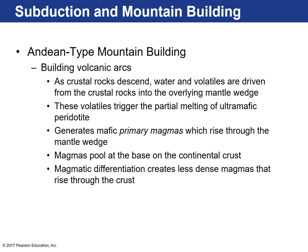As the ocean plate descends, water and volatiles are driven off its surface into the overlying mantle wedge, triggering partial melting of the peridotite mantle. Those partial melts are mafic in composition — we call them primary magmas — because they're the very first type of magmas to form, very mafic-rich, and typically basalt. Because basalts have higher density, being rich in iron and magnesium, they tend to pool at the base of the continental crust.